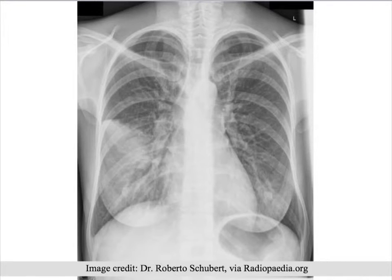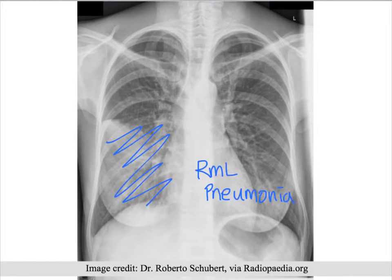What about this chest x-ray? Can you see where the infiltrate is? It's also on the right side, but this time it's in the right middle lobe. This is a right middle lobe pneumonia.